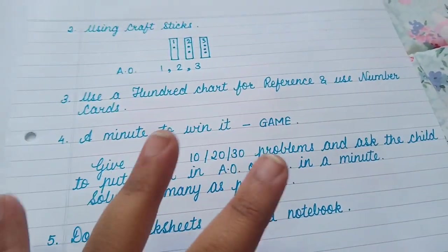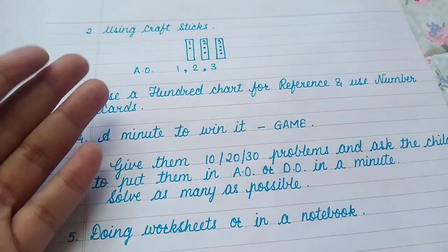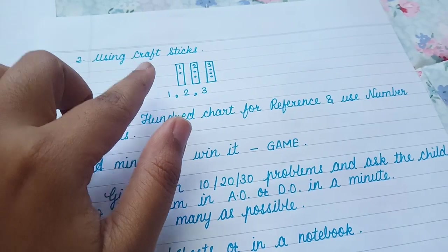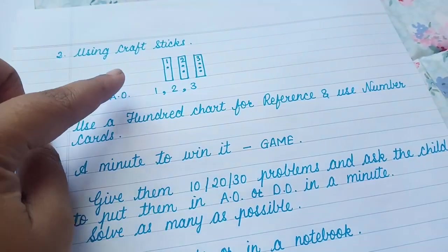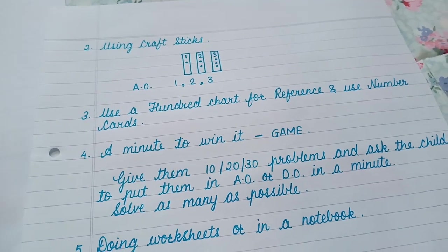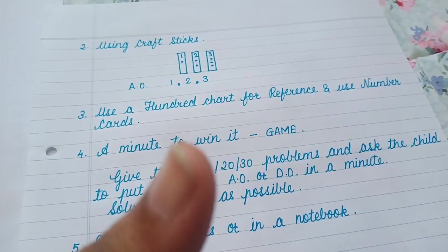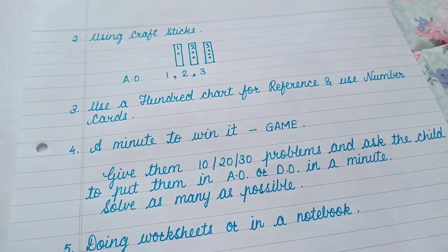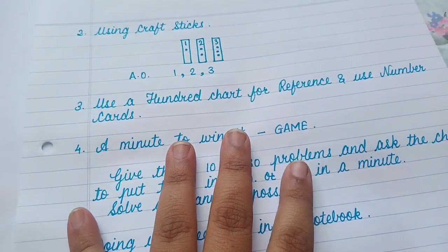And now these three are a little advanced. Once they know the ascending order and descending order using the hands-on activity of craft sticks and then using the number line, they can move on to this for the bigger numbers, from 21 to 100, for example.